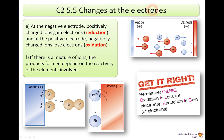We're looking at changes at the electrodes in a bit more detail in electrolysis. There are two key points. At the negative electrode in electrolysis, positively charged ions gain electrons. We call this process reduction — if you're gaining electrons, you are reduced, because electrons are negative.